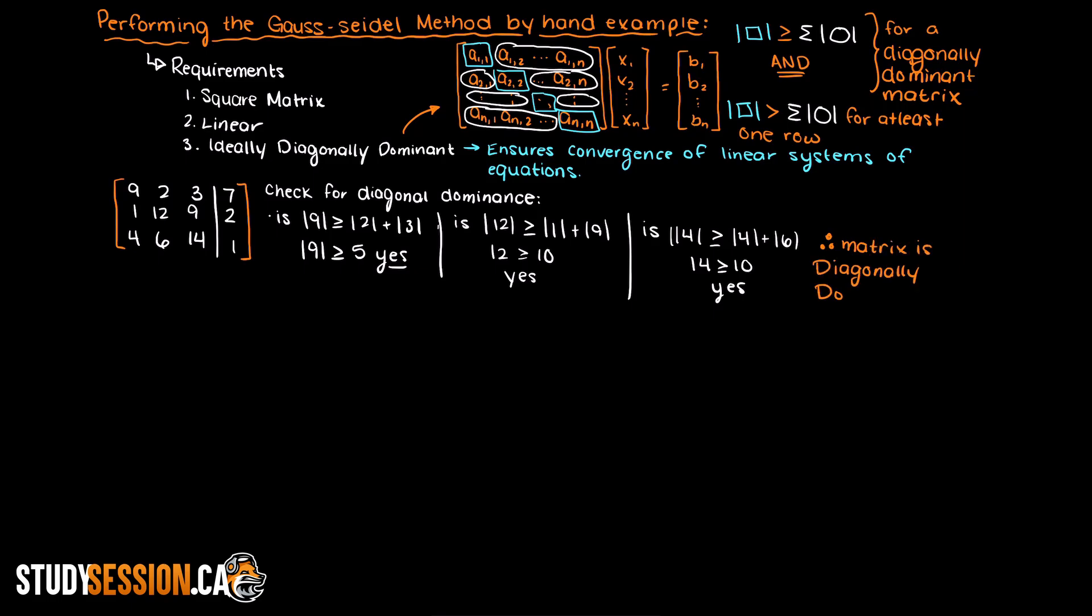So as you can see here, it is clear that our matrix is diagonally dominant, therefore no matter what we assume for our initial x vector values, our answer will always converge. So let's begin solving this matrix using the Gauss-Seidel method.